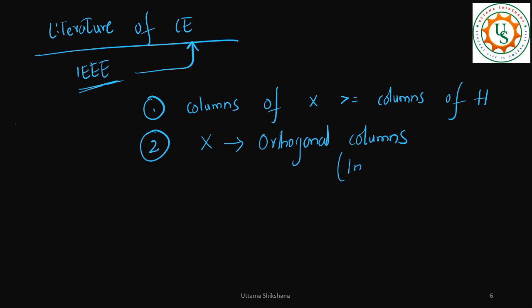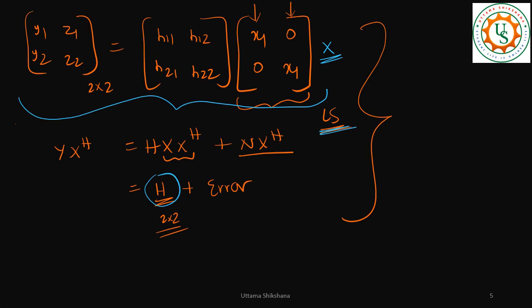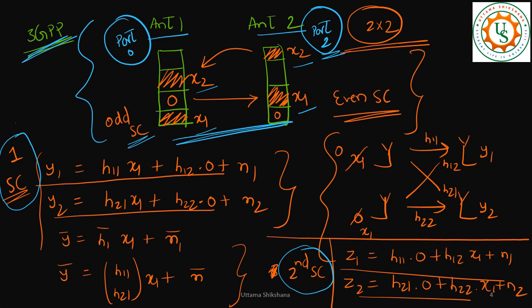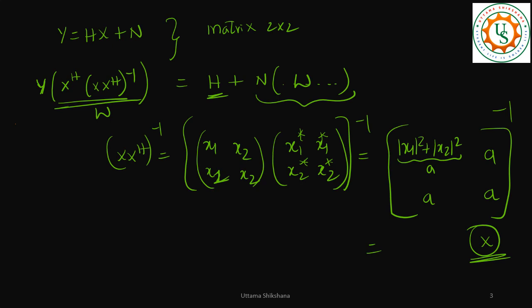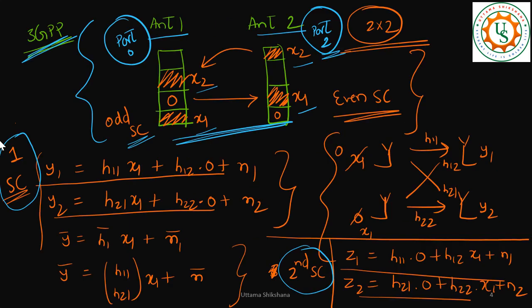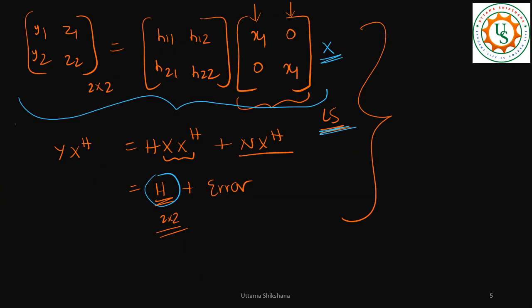Based on these two criteria — sufficient number of columns and orthogonal columns — we need to proceed for channel estimation. We satisfied the first condition by packing two subcarriers into a matrix with two columns, but the second condition was not satisfied: the columns were not orthogonal. That's why applying least squares gave a non-invertible X·X Hermitian. But in the working configuration — the odd/even subcarrier split — the X matrix had sufficient columns and each column was orthogonal to the other, so we were able to estimate the channel.